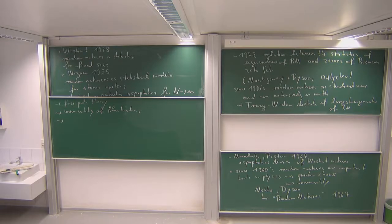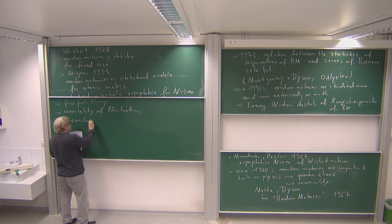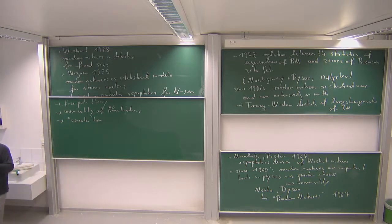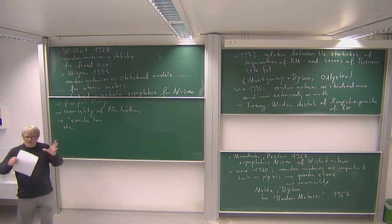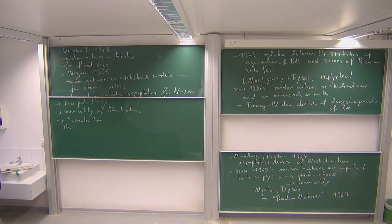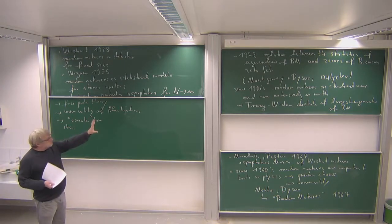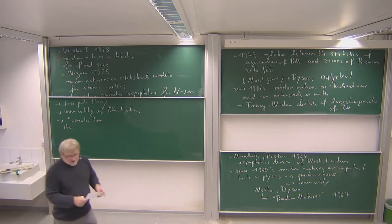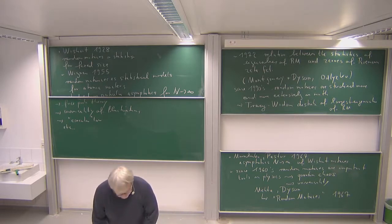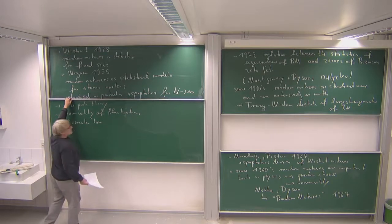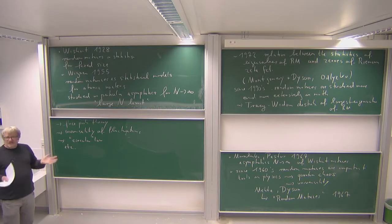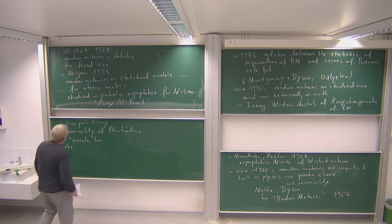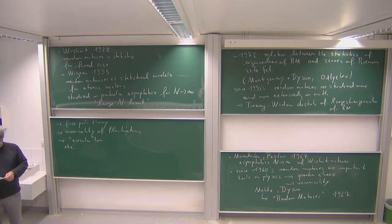Maybe around ten years ago or so there was a big interest in the circular law, which is a kind of non-self-adjoint version of the Wigner semicircle law, and this was more or less also answered in this context. There are many more things. In this class I will try to touch all those things. That's what I want to say about the history — there have been many more specific results, but it doesn't mean much to you at the moment, so maybe we leave it with this.